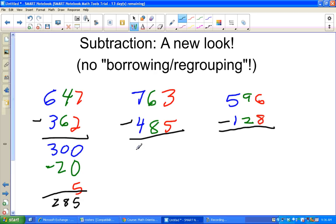Now, 763 minus 485, we're going to do the same thing. That's 700 minus 400 is, again, 300. 60 minus 80, it's again negative 20. I could have changed those tens digits to make something different. And 3 minus 5 is negative 2. So what we have is 300 and negative 20 and negative 2. 300 and negative 20 is 280. 280 and negative 2 is 278.